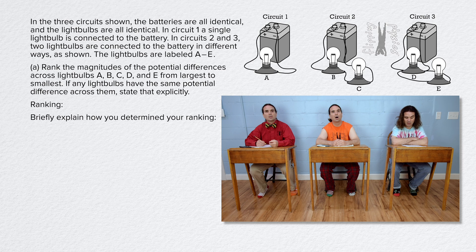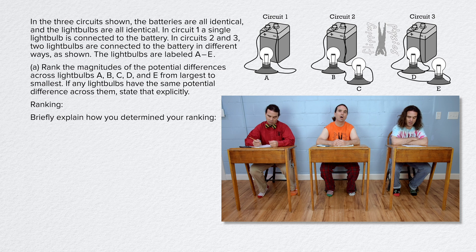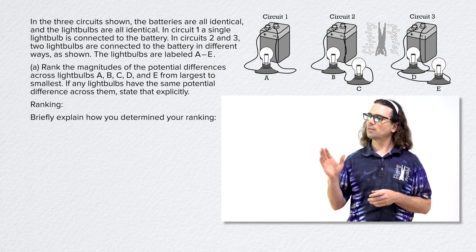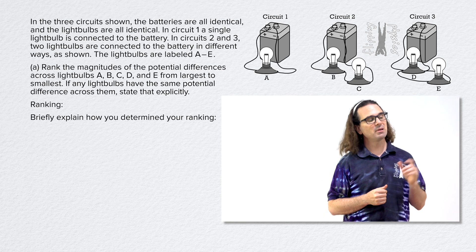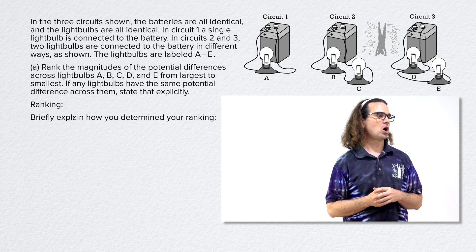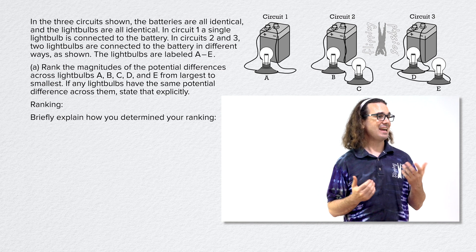It says ranking with a space for us to rank the electric potential differences, and then it says briefly explain how you determined your ranking with a space for that. Billy, please answer all of part A.